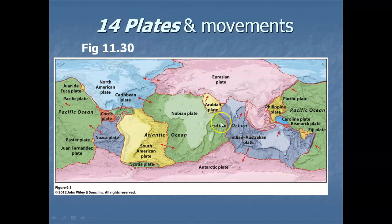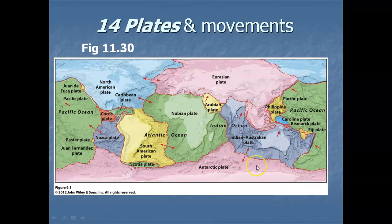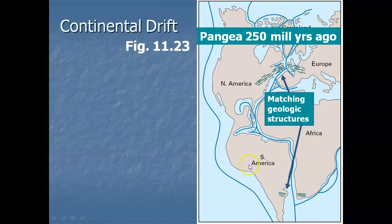Here's a map showing 14 major plates found on earth. They're all named and tend to move in particular directions. I'll be talking about a couple of these plates when giving examples of plate movements.